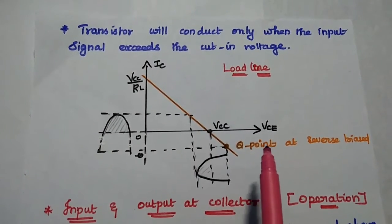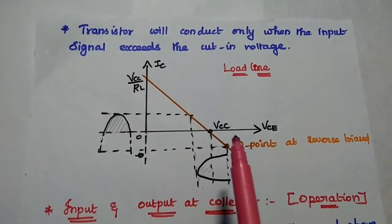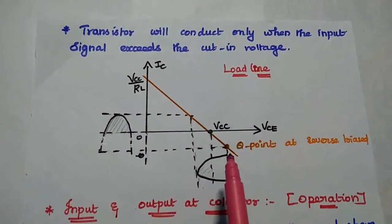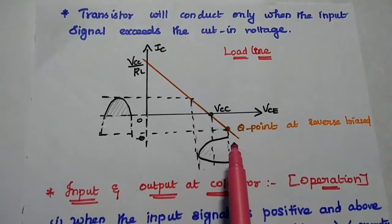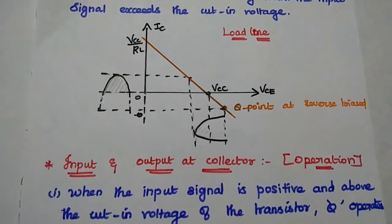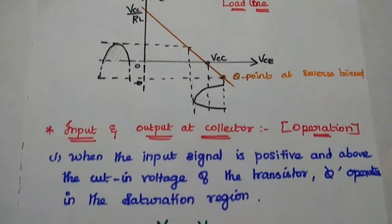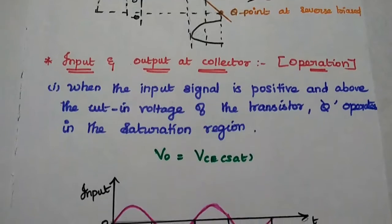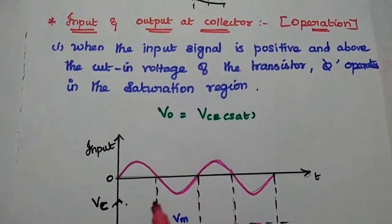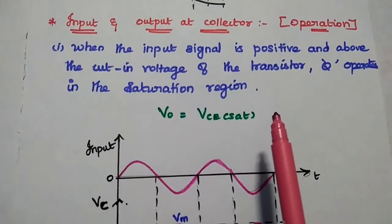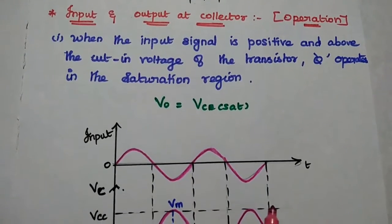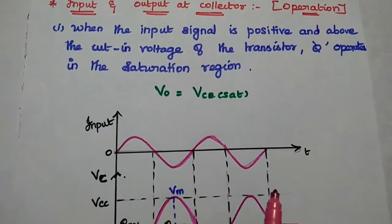Q point means operating point or quiescent point. We have to select this point just below the X axis, and it is in the reverse biased condition. Next, we are going to discuss the relation between input and output at the collector side. Whenever the input signal is positive and above the cut-in voltage of the transistor, then only the transistor starts conducting and it operates in the saturation region.